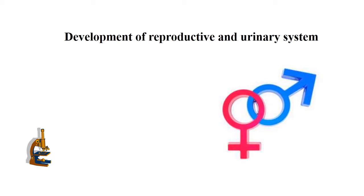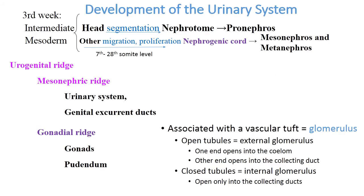Development of the reproductive and urinary system. The urogenital system develops from the intermediate mesoderm.